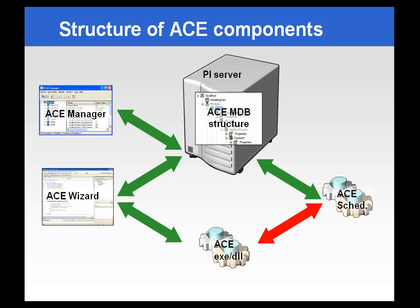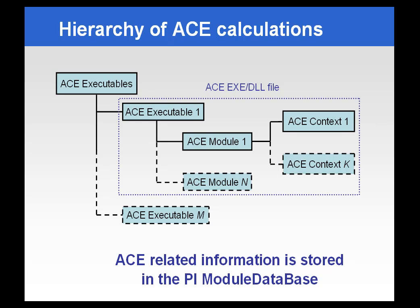Where most people have these applications installed on their PI servers, there are quite a number of different configurations you can take advantage of. Keep in mind that the ACE calculations, the DLLs and executables, do require resources — CPU time and memory. So if you have a lot of ACE calculations, you may want to think about hosting them on a machine other than your PI server. When developing your executables, consider grouping modules and contexts under individual executables based on the resources and time each executable will require.